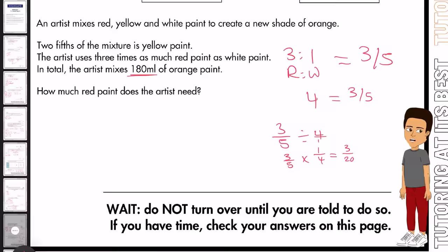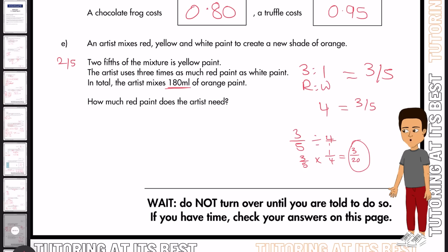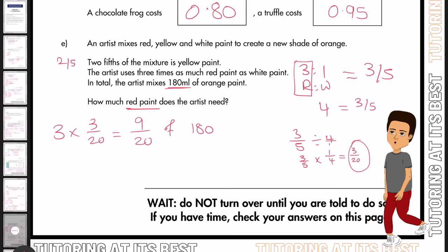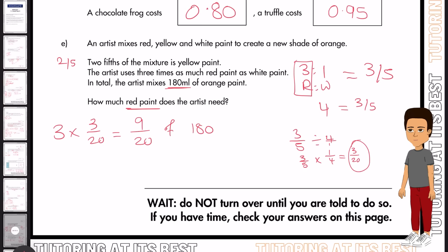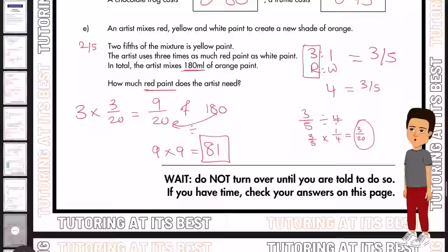So we now know the value of one ratio is three over 20. But we need three as it's asking us for the red paint. So three multiplied by three over 20 is nine over 20. So we need nine over 20 of 180. So we take our double step method, which is 180 divided by 20, which is our denominator. And that gives us nine. And then nine times the numerator, which is 81. And that is our answer. 81 milliliters of red paint was needed.